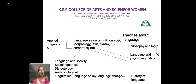Applied linguistics is used as a language system involving phonology, morphology, lexis, syntax, and semantics. Language and society covers sociolinguistics, used as dialectology, anthropological linguistics, language policy, and language change.